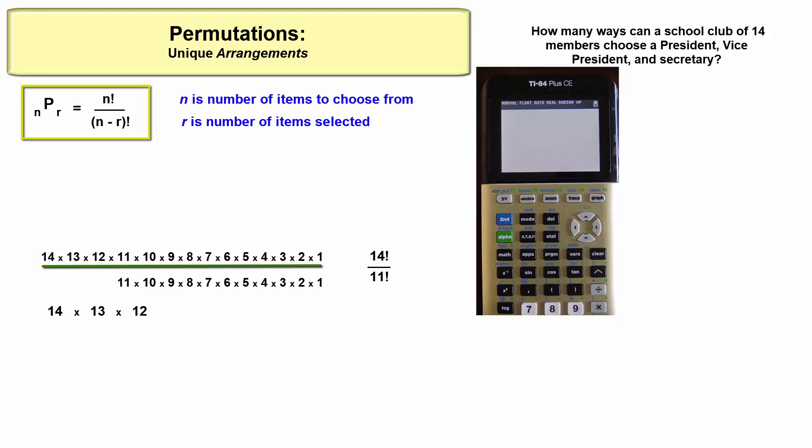The formula is read 'permutation of n choose r.' Look what happens when n is 14 and r is 3: we get 14 factorial divided by 11 factorial, so there we go again - 14 times 13 times 12. That's all there is to the permutation formula. It's just a sneaky way to save time by using the factorial function.